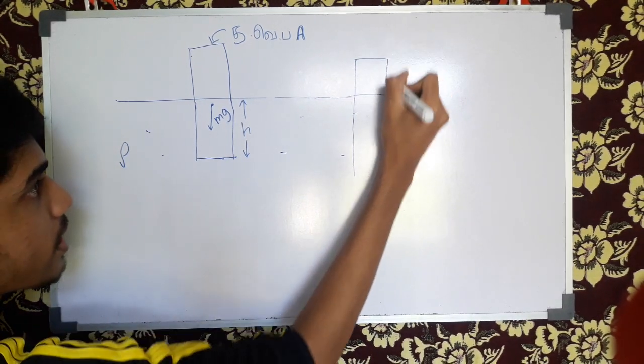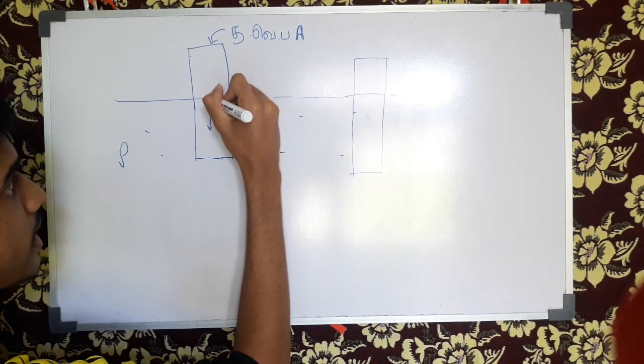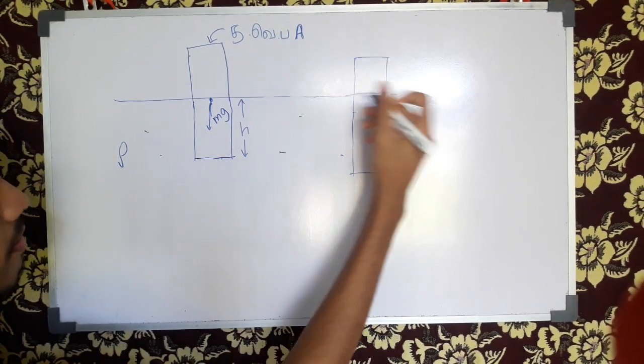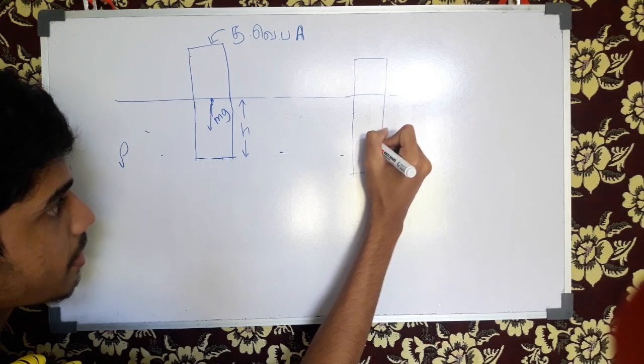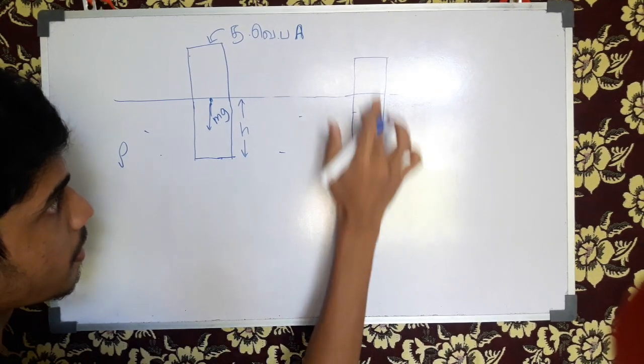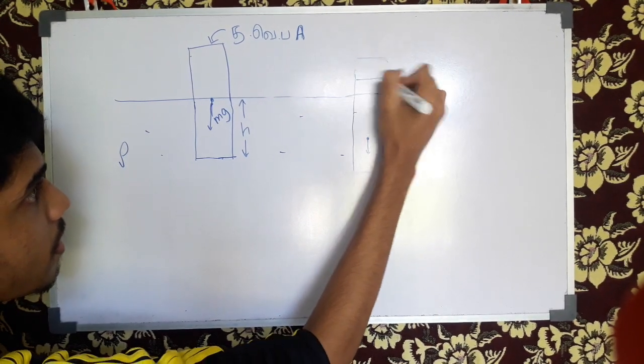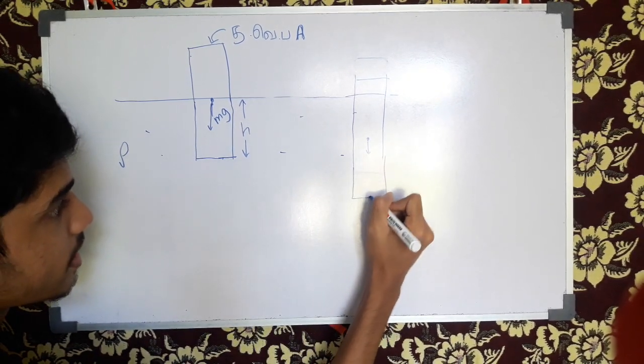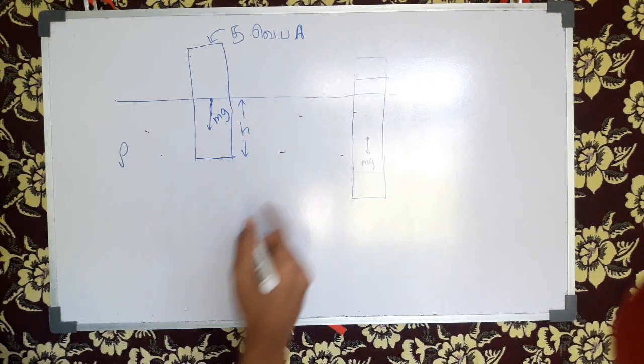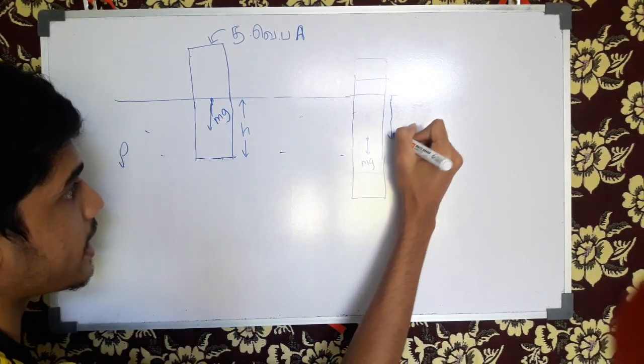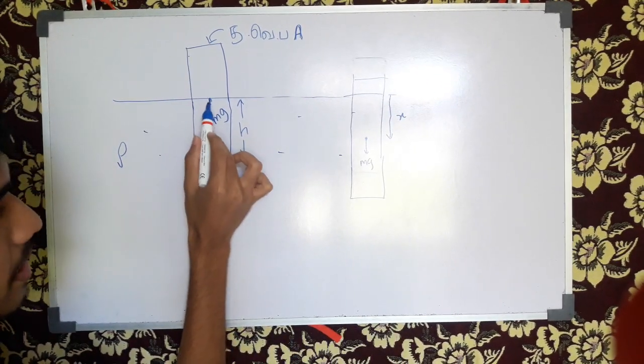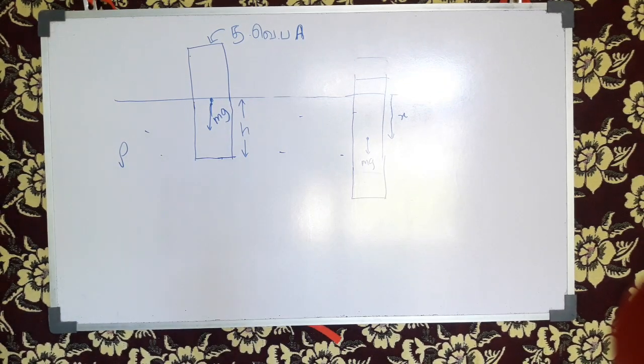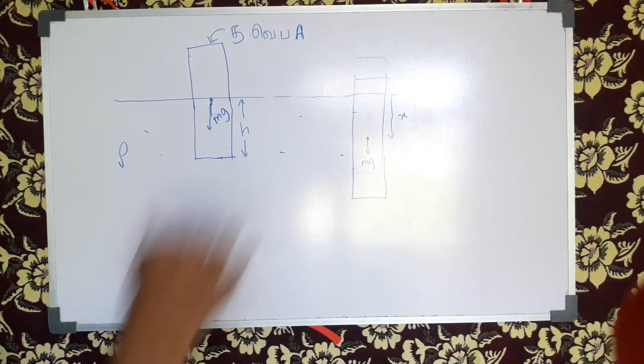This is x. I will make it to the x. First, we have mg. Now, I will make it to the x. This is mg. Now, we have to make equations. Now, what are we doing now? After we go to the block, this is a small displacement.